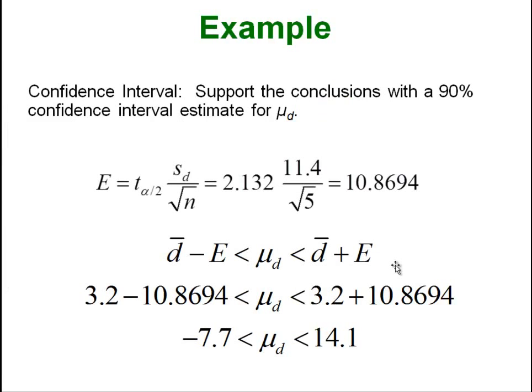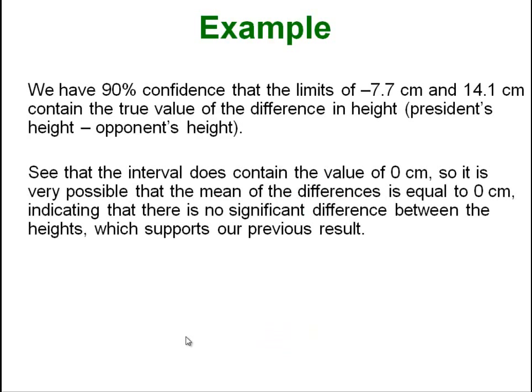If we want to calculate our confidence interval, in this case a 90% confidence interval, we can plug everything into the formulas and get this negative 7.7 to positive 14.1. And because this interval does in fact contain zero, we can be 90% confident that the true population differences would contain zero, and therefore that is another indication that there is no statistical difference between the two, which is what they are talking about here.